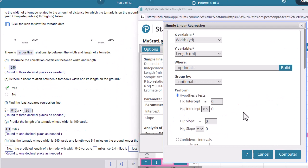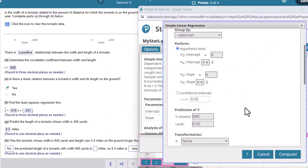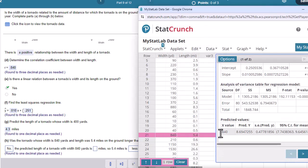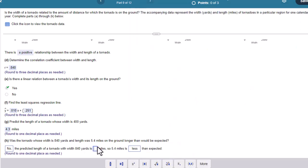So to find this one out, width is 840. I'm going to go ahead and put 840 into my predicted y. And when I press Compute, scroll down, 840 is predicted to be about 8.7. So the predicted length of the tornado was 840. So the predicted length was 8.7. Or I could have done that by hand. I could have done 0.010 times 840 plus 0.251. So 5.4 is definitely less than expected.